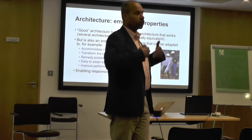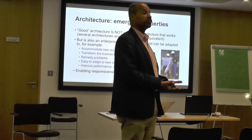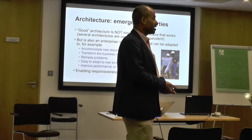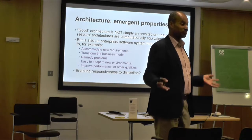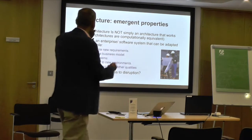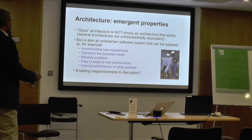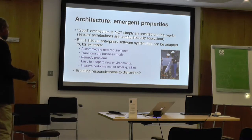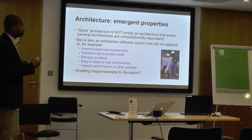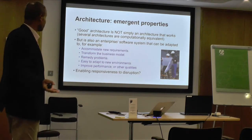Architecture is about emergent properties and qualities that result from putting things together in a certain way. It's not just about an architecture that works or delivers the business function you want, because many architectures will do the same thing. Things like creating new requirements is essential - helping transform the business model, adaptation mechanisms, and problems being easy to adapt to new environments: hardware, software, infrastructure, business requirements, human development, customer tastes and trends. Basically, it's about qualities and also enabling responses to disruption.